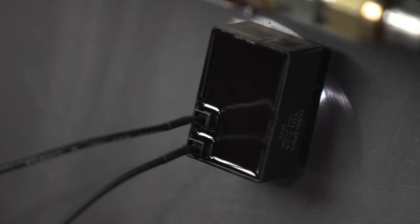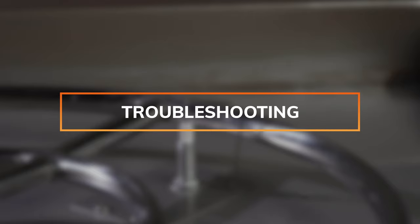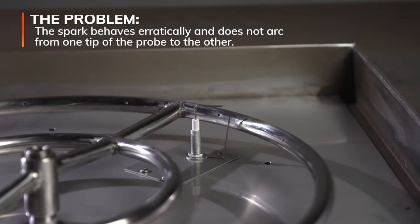Once you set your burner pan back in place, it's time to adjust and tune the system. We will demonstrate a few different scenarios that will keep your igniter from working properly and how to adjust accordingly. Here's an example where the igniter probes are too far apart.